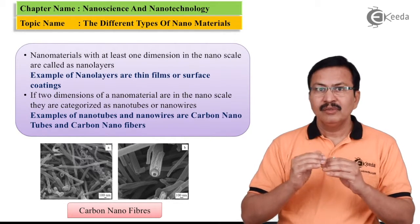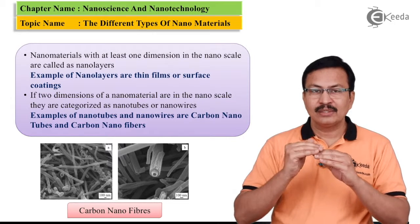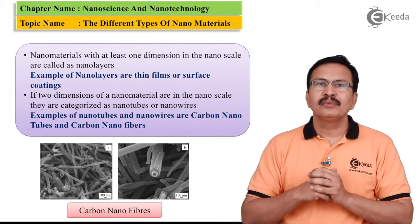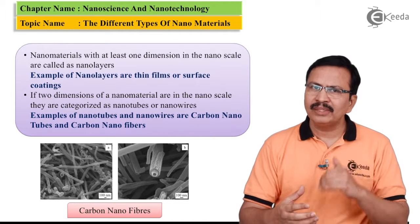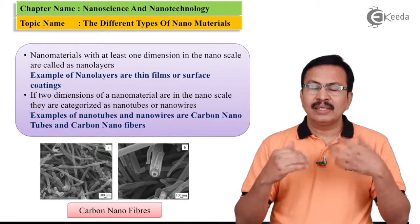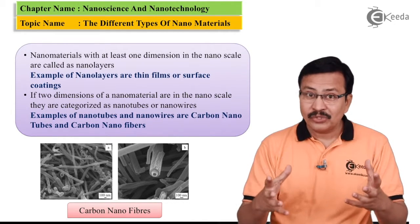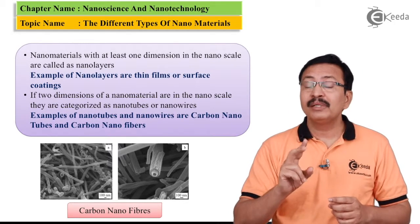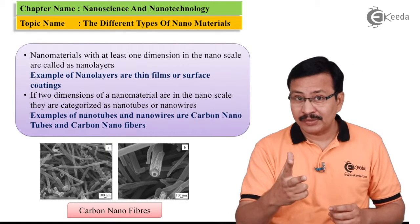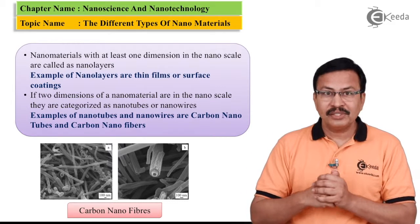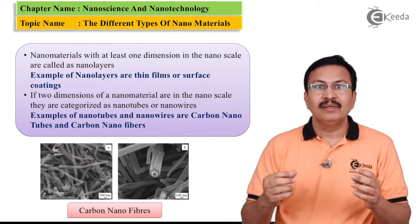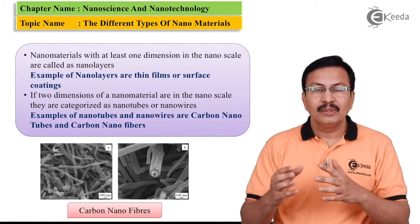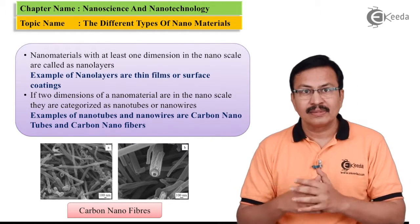In this case, we have the nano size only in one dimension. The second category of nanomaterials corresponds to a nanoscale that is present not only in one dimension but rather in two dimensions. These are called nanowires or nanowhiskers.